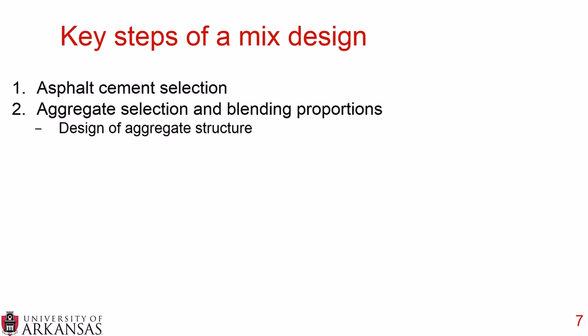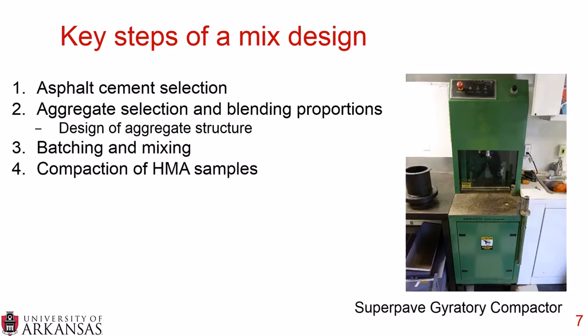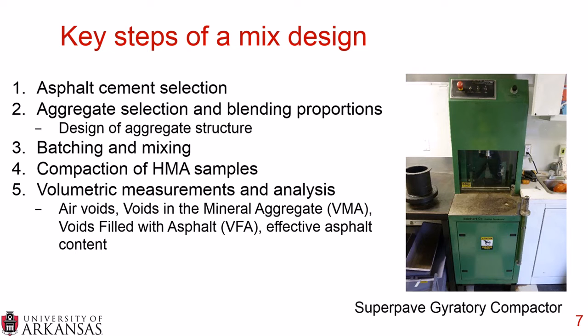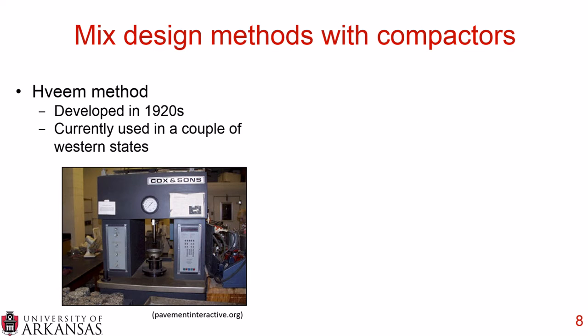Key steps of a mix design first include the asphalt cement or asphalt binder selection. You must select your aggregate and the blending proportion, which gives you a design of the aggregate structure. You batch the aggregate and mix it with the asphalt binder, then compact the hot mix asphalt samples — for example, on a Superpave gyratory compactor. You then take volumetric measurements and analyze those, which can include air voids, voids in mineral aggregate (VMA), voids filled with asphalt (VFA), and effective asphalt content.